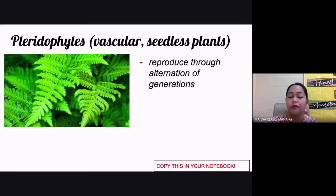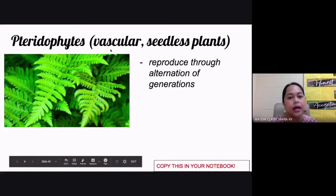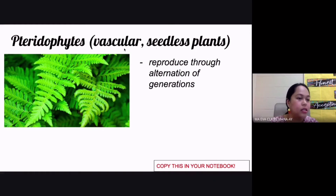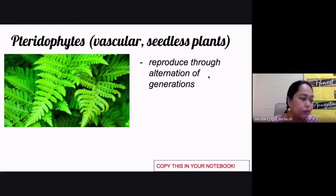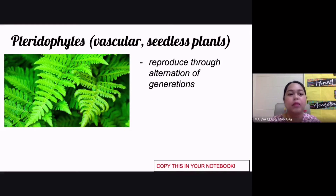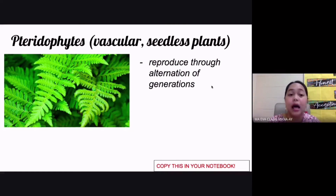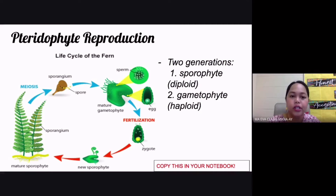The next phylum is pteridophytes. These are vascular plants — they have xylem and phloem — but they are seedless. They reproduce through a special method called alternation of generations. This reproductive cycle is shown on screen and involves two distinct stages.